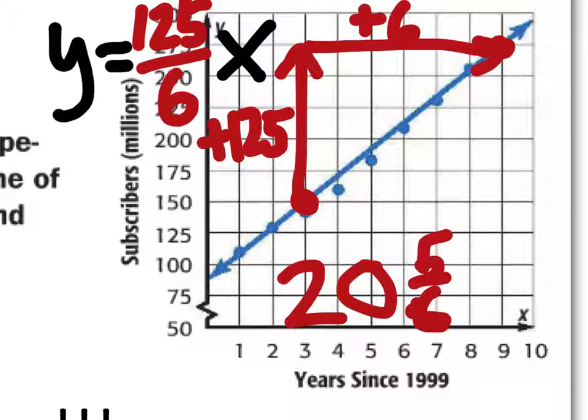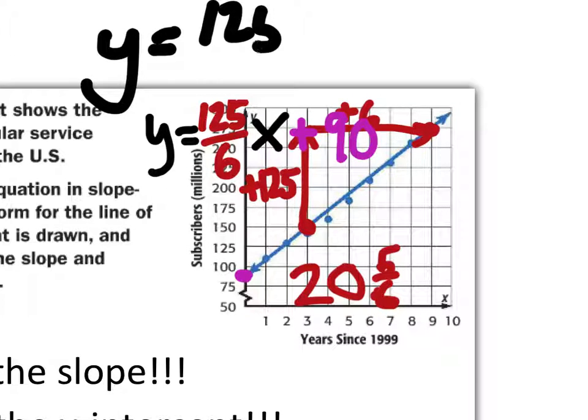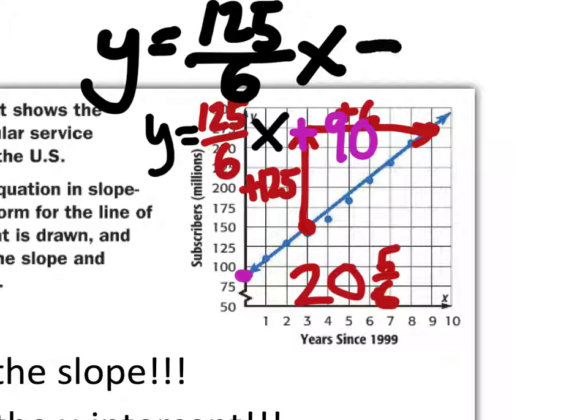125 over 6 x. And, then, what is my y-intercept? What does that point look like about there? About 85, 90. Sure. And, you just plus 90. So, if we were to write this outside, y equals 125 over 6 x plus 90.